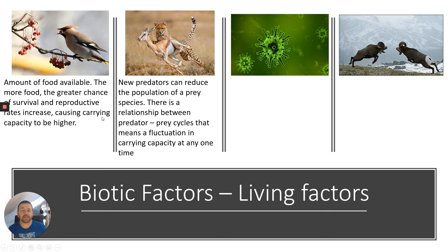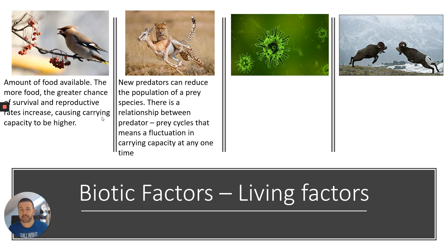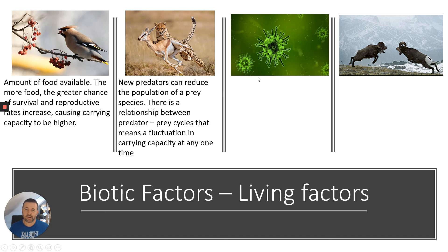Second biotic factor: new predators. Predators may be introduced naturally through geological time or even by humans, and they can reduce the population of a prey species quite dramatically. There is a relationship between them called predator-prey cycles, which we'll discuss in a forthcoming video. This causes fluctuations in carrying capacity, producing oscillations between predator and prey populations.